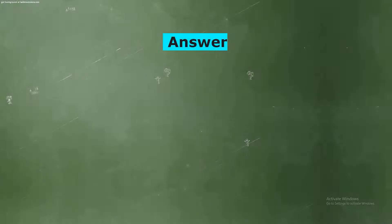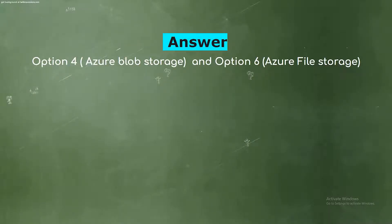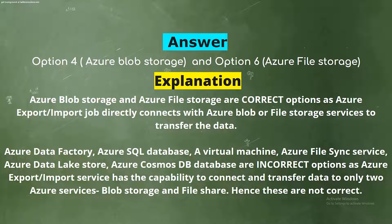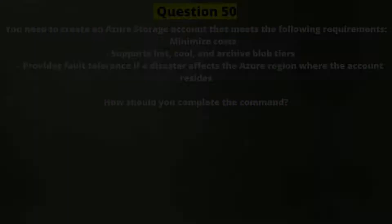The correct answers are Option 4, Azure Blob Storage, and Option 6, Azure File Storage. Explanation: Azure Blob Storage and Azure File Storage are correct, as the Azure Import-Export job directly connects with Azure Blob or File Storage services to transfer data. Azure Data Factory, Azure Data Lake Store, and Azure Cosmos DB are incorrect, as the Azure Import-Export service can only connect and transfer data to Blob Storage and File Share.